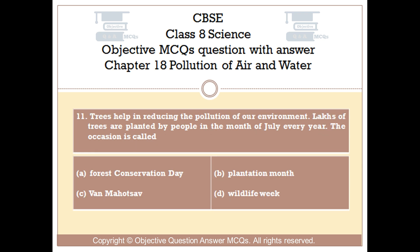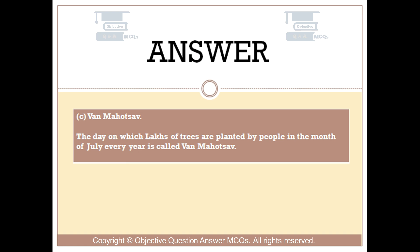Question number 11. Trees help in reducing the pollution of our environment. Lots of trees are planted by people in the month of July every year. The occasion is called? Option A: Forest Conservation Day. Option B: Plantation Month. Option C: Van Mahotsav. Option D: Wildlife Week. The right answer is Option C — Van Mahotsav. The day on which lots of trees are planted by people in the month of July every year is called Van Mahotsav.